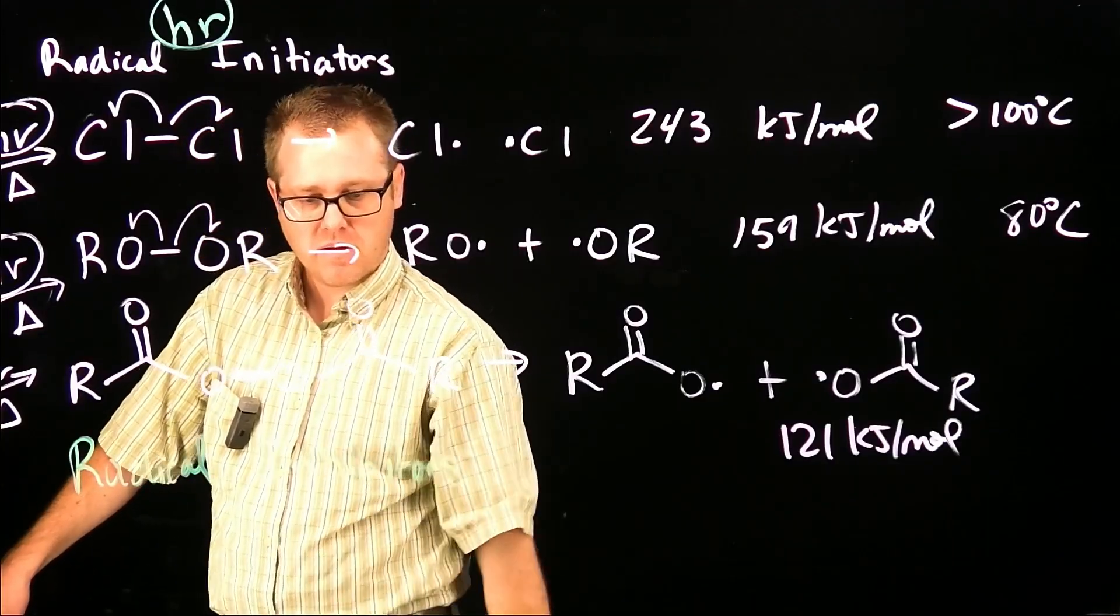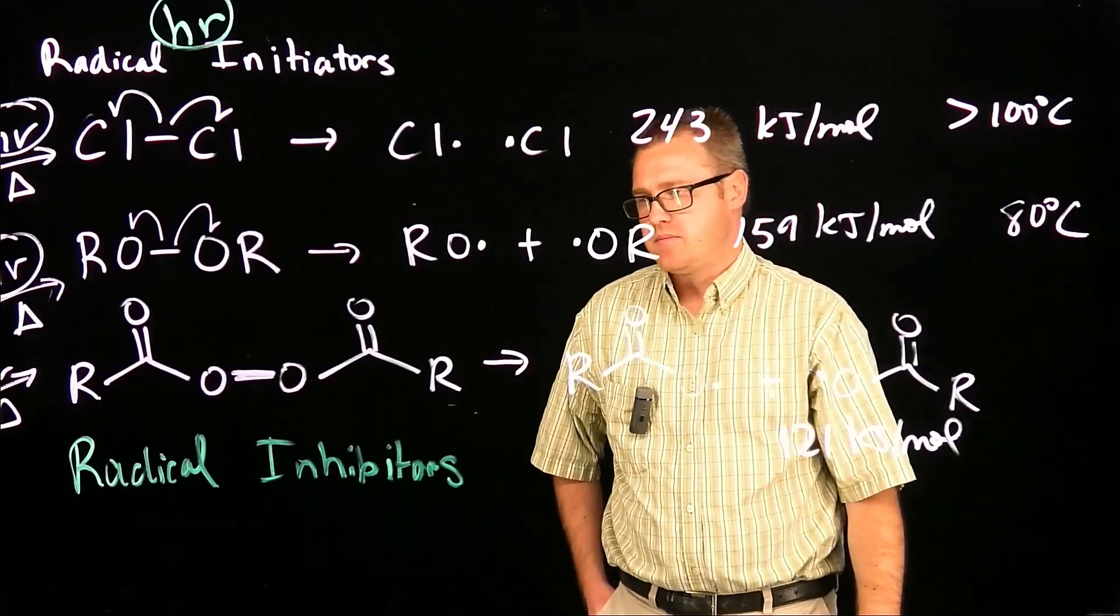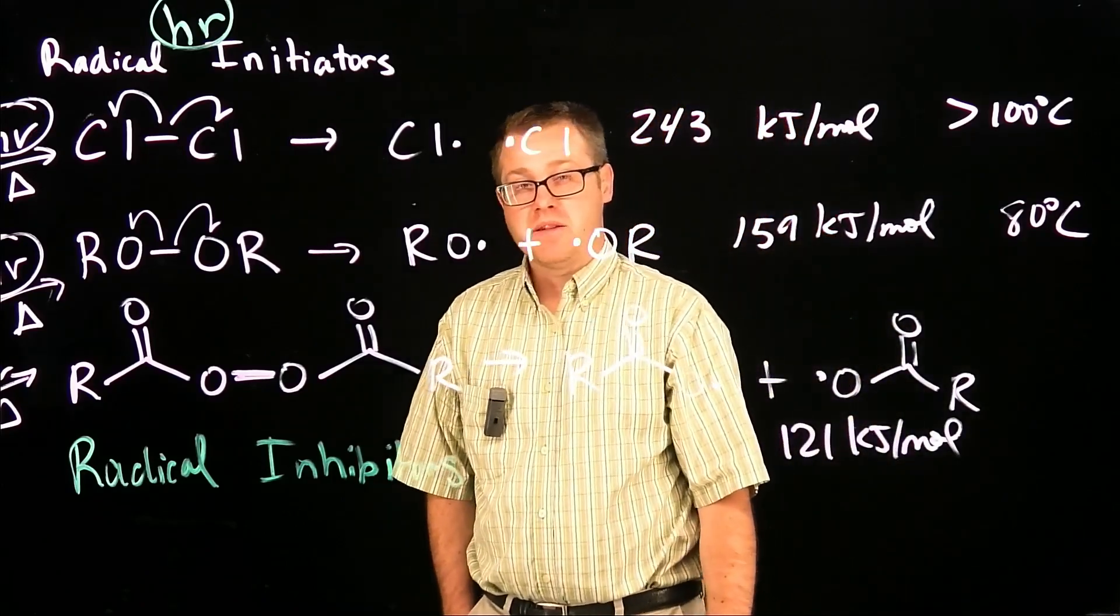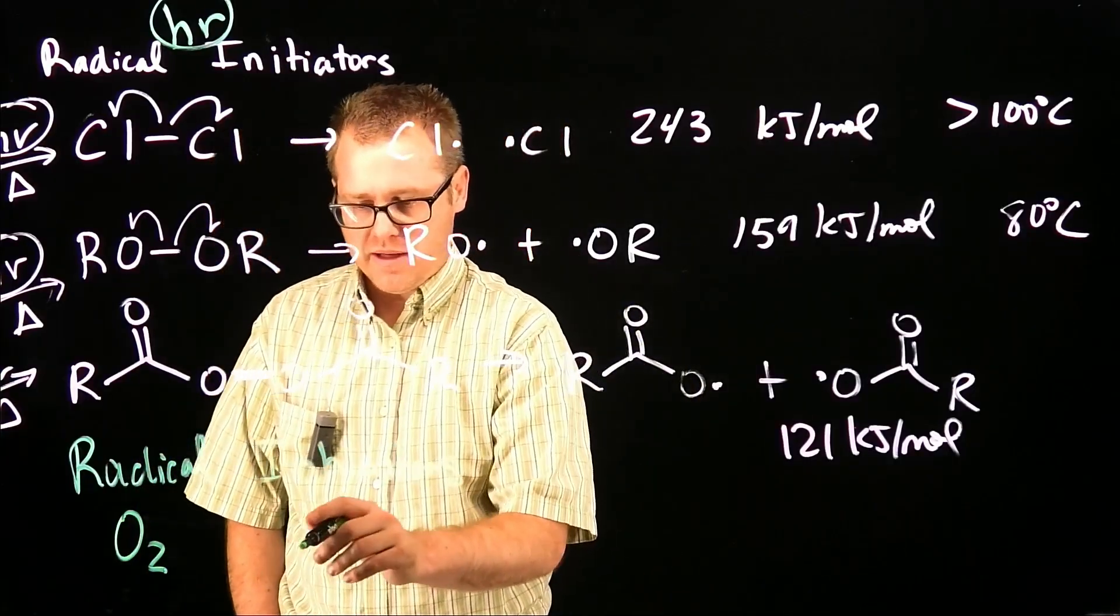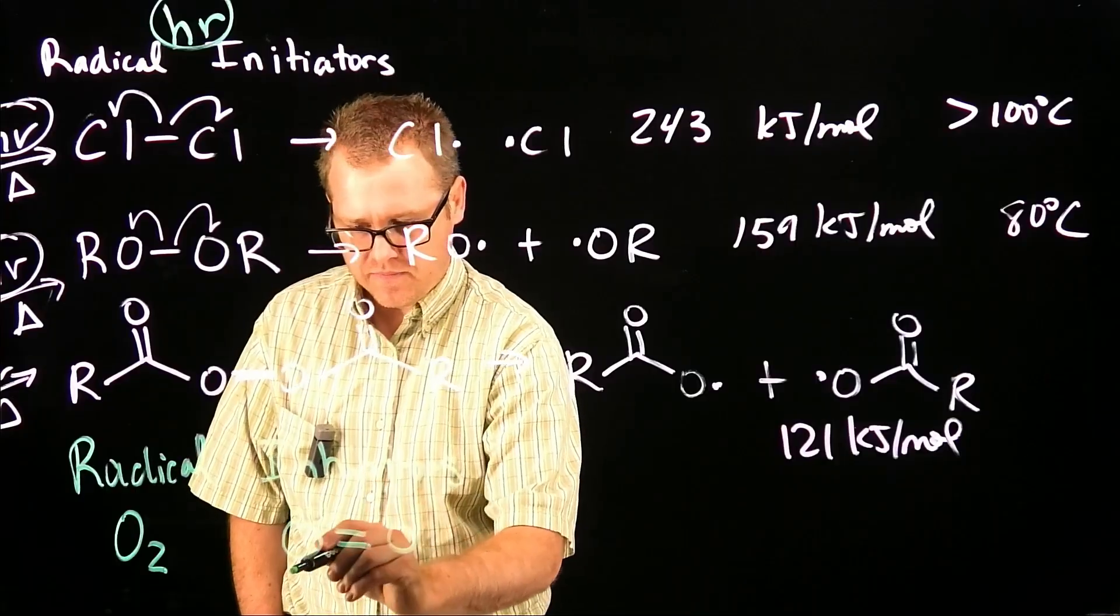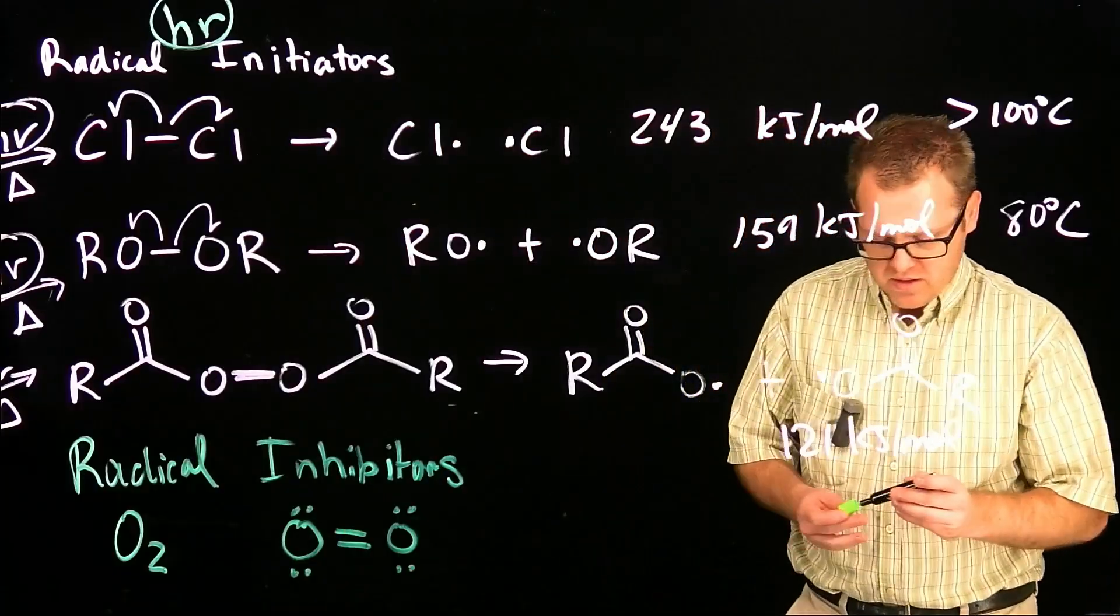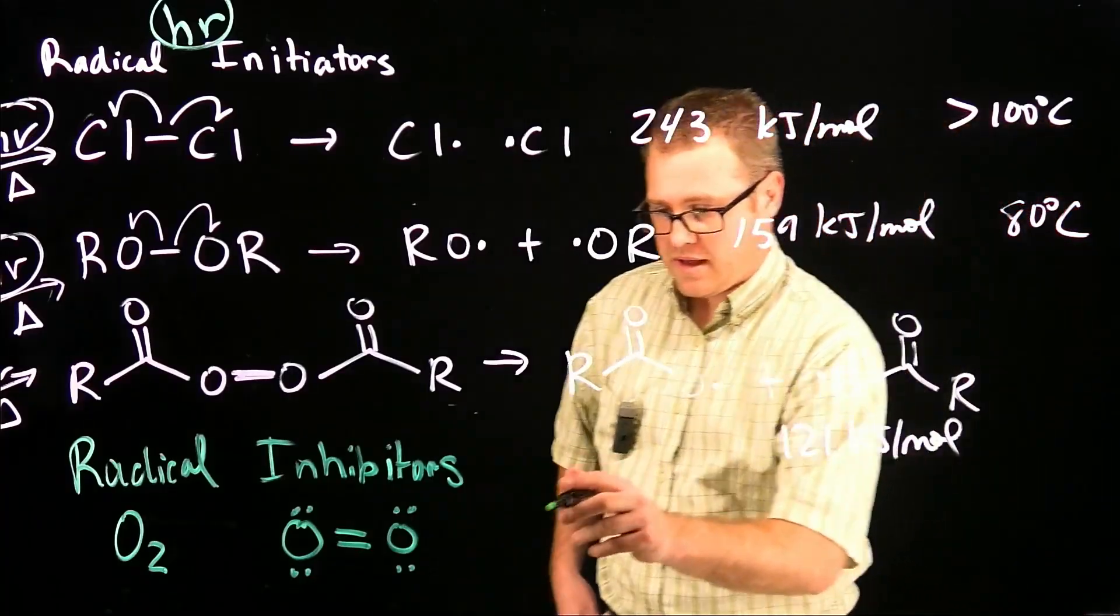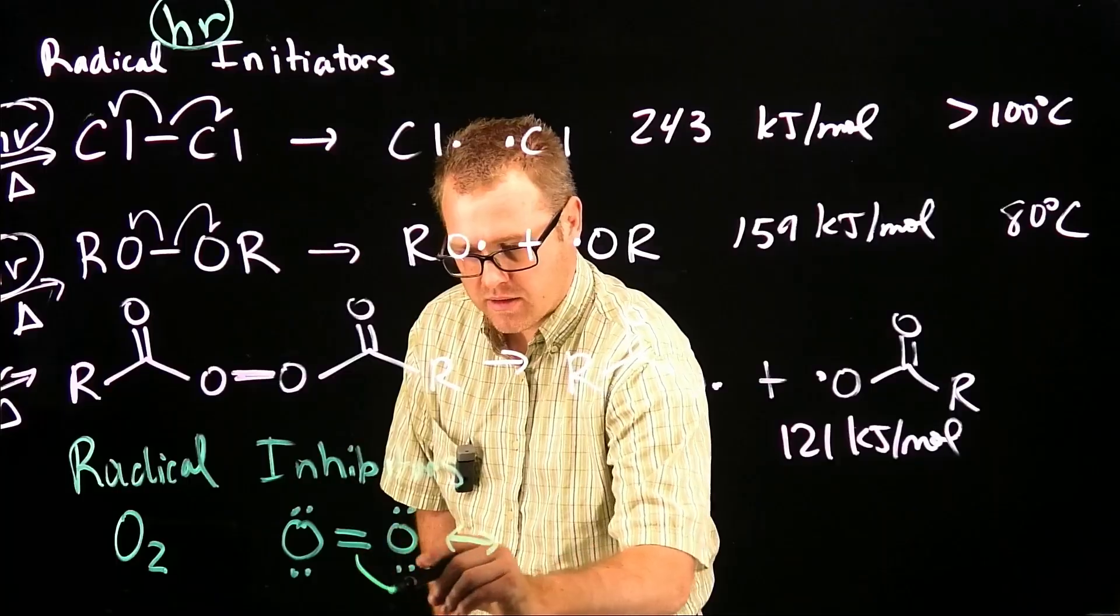Now, you can have radical initiators, but then you can also have radical inhibitors. A very common radical inhibitor is elemental oxygen. O2. When we take a look at O2 and its Lewis structure, we can see that it looks like this.